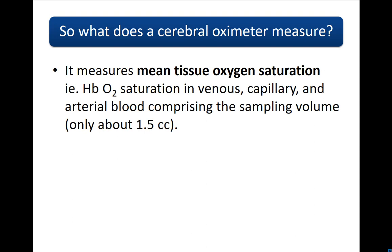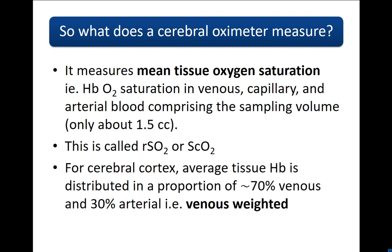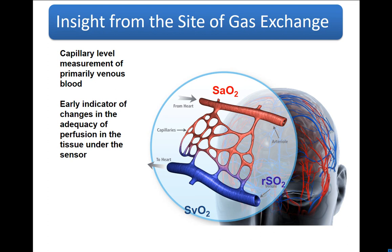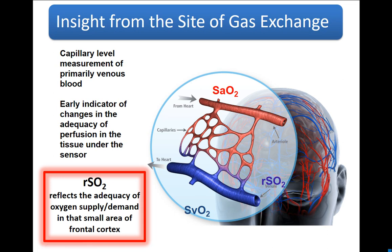Some near detectors pick up oxygenation changes in skin and subcutaneous tissue, which we don't want. So there's a proximal arc detector and a distal one — which picks up both deep and superficial signals — and a subtraction algorithm is used to determine cerebral versus superficial oxygenation. They all work in a similar way with varying degrees of success. The system measures mean tissue oxygen saturation in a small sampling volume, called RSO2 or SCO2. For the cerebral cortex, the signal is distributed approximately 70:30 venous-weighted, so the normal RSO2 is around 50–75%, similar to jugular venous oxygen in a healthy patient.